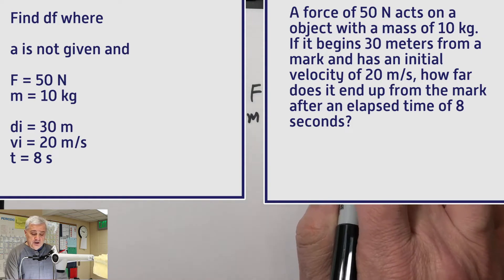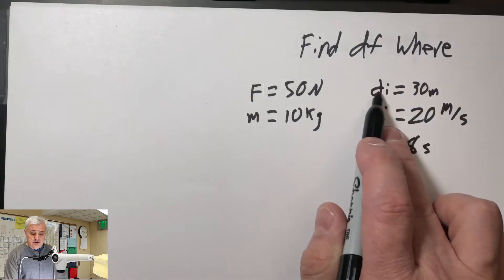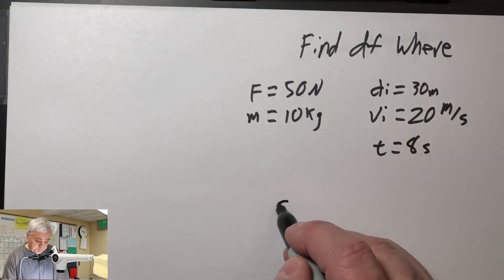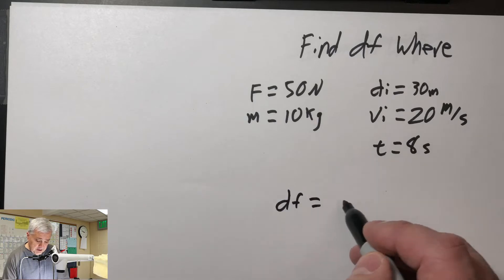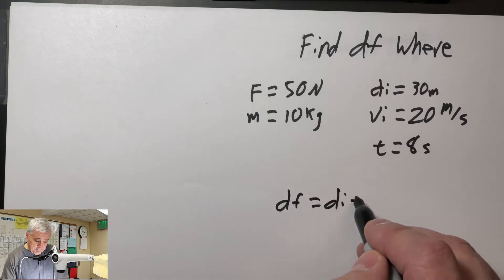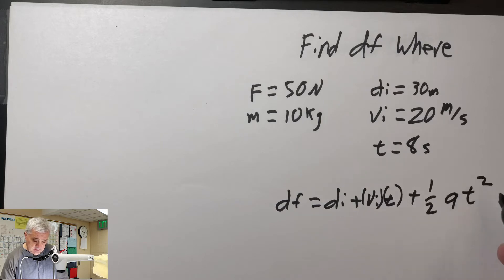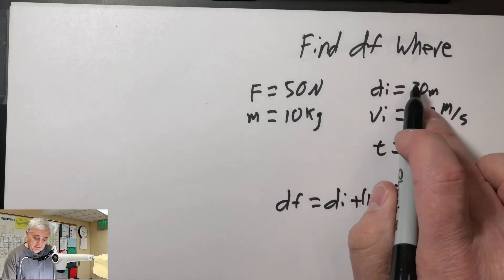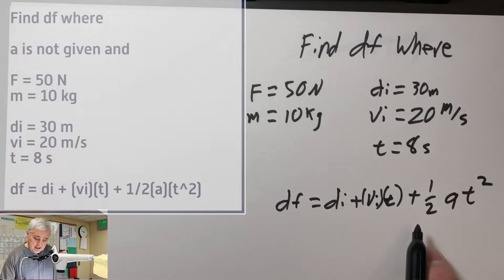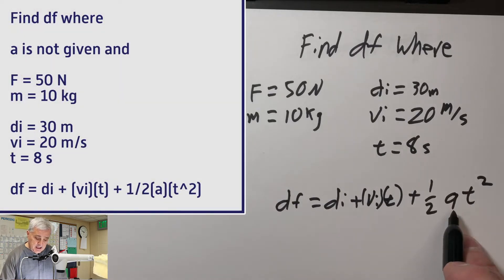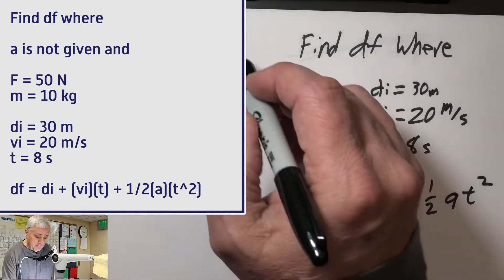Now the distance equation, the equation with distance in it, is d sub f equals d sub i plus vi times t plus 1 half a t squared. So I've got d sub i, I've got v sub i, I've got t, I've got no a. Fortunately, I can find a using force and mass.